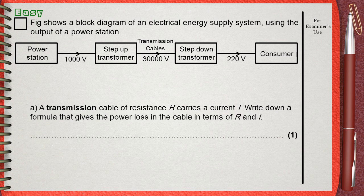Figure shows a block diagram of an electrical energy supply system using the output of the power station. As you see, this flow diagram shows the power station on the left, producing 1000 volts to a step-up transformer. The step-up transformer increases the voltage to 30,000 volts.